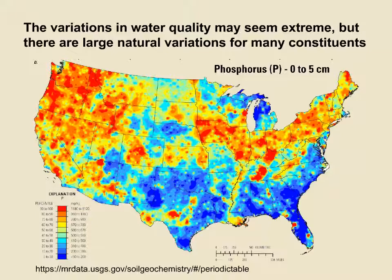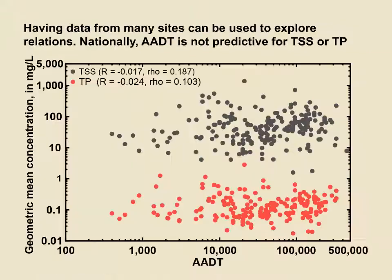This is a graph with a log scale of average annual daily traffic on the horizontal axis and the geometric mean concentration of total suspended solids and total phosphorus on the vertical axis. The scatter of the data and the low correlation coefficients indicate that common assumptions about the effect of traffic volume on constituent concentrations may not be warranted for total suspended solids or total phosphorus concentrations, at least on the national scale. This may not be surprising given the potential variability shown in the national maps for sediment and phosphorus. Because there is a lot of variability in many states, state DOTs may want to consider these factors when selecting monitoring sites and when assessing natural background concentrations.